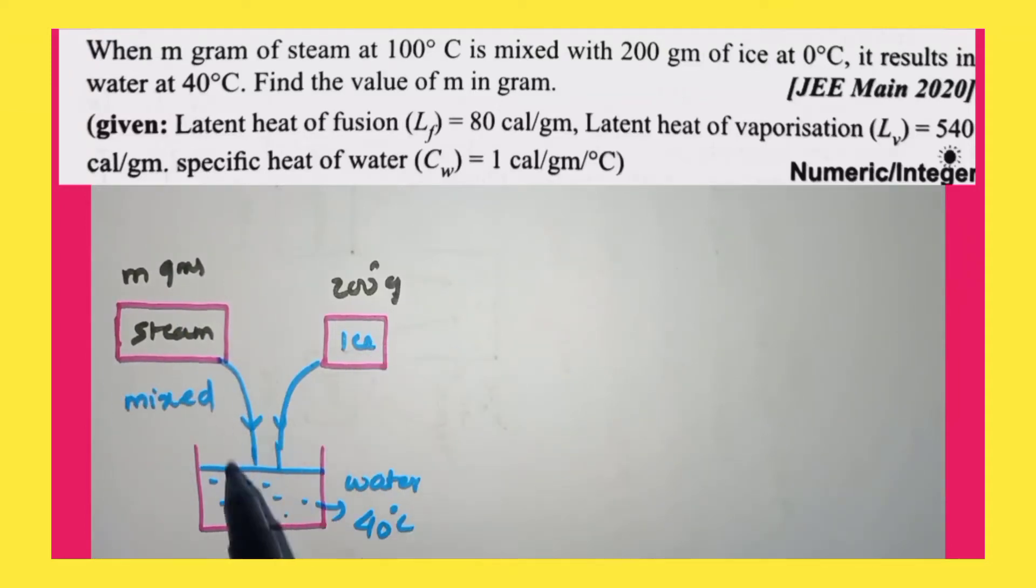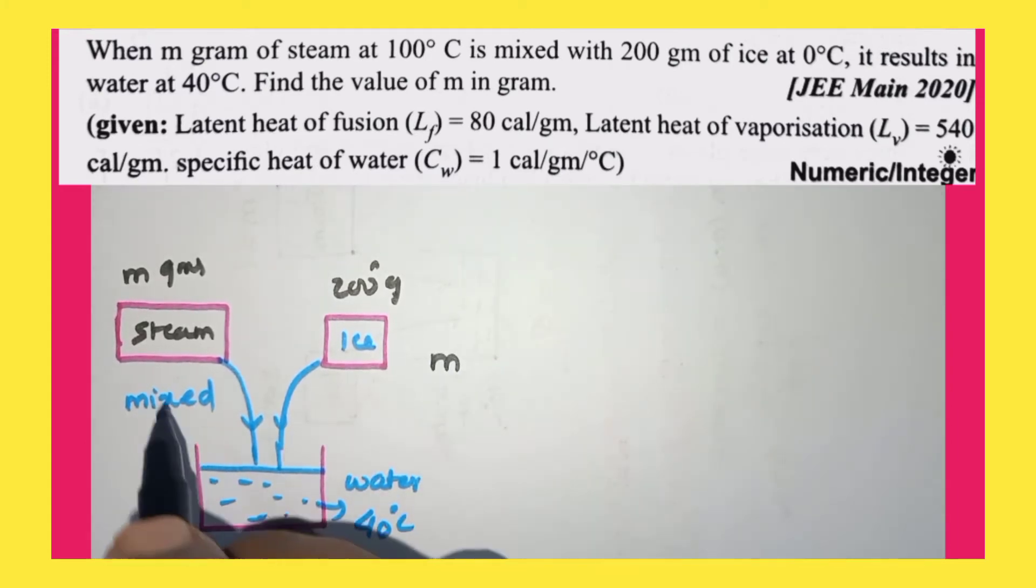When m grams of steam is mixed with 200 grams of ice, finally it is going to become water at 40 degrees Celsius. So what is the formula we're going to write here now? Mass of the steam is taken as m into latent heat of steam.